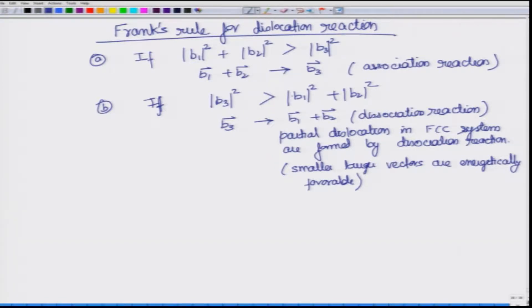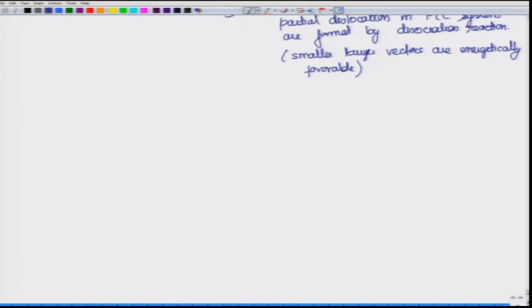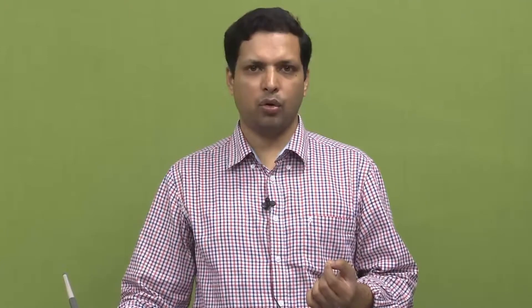This is saying that smaller Burgers vectors are energetically favorable. When we come to BCC and FCC lattice systems, there are also examples where b1 + b2 goes to b3, meaning association reactions take place. But the dissociation reaction is more commonly known — when a full dislocation in an FCC system dissociates into partials. Most dislocations would be in a mixed form; only at particular points will they be pure edge or pure screw.